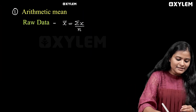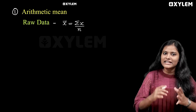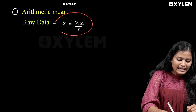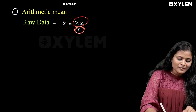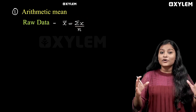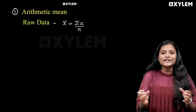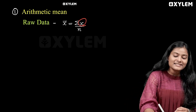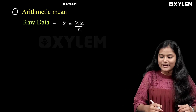First, we are going to talk about Arithmetic. We are going to talk about the Raw Data equation. The formula is: x-bar is equal to summation x divided by n. What is that? n is called the number of observations. We are going to talk about small letter n, and x represents the values.